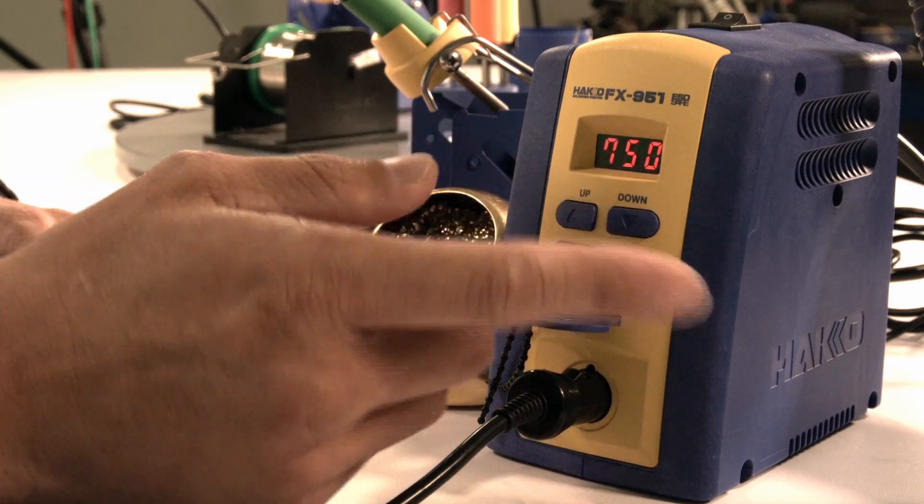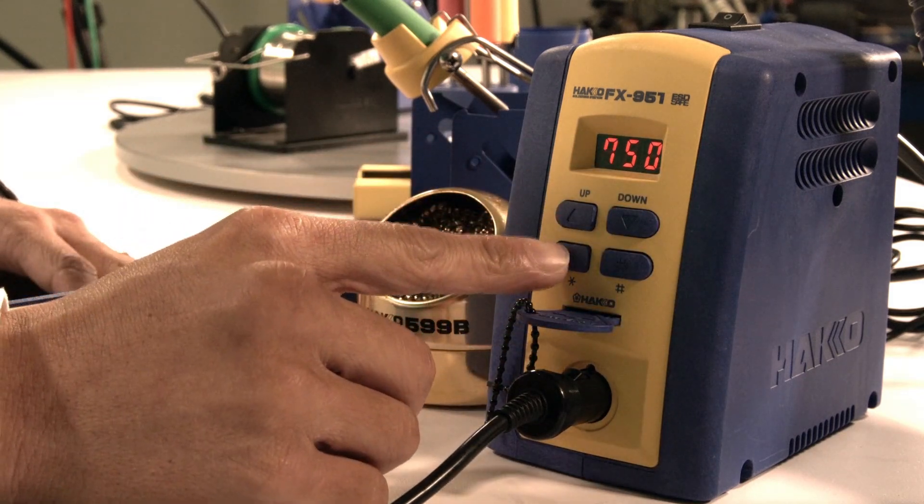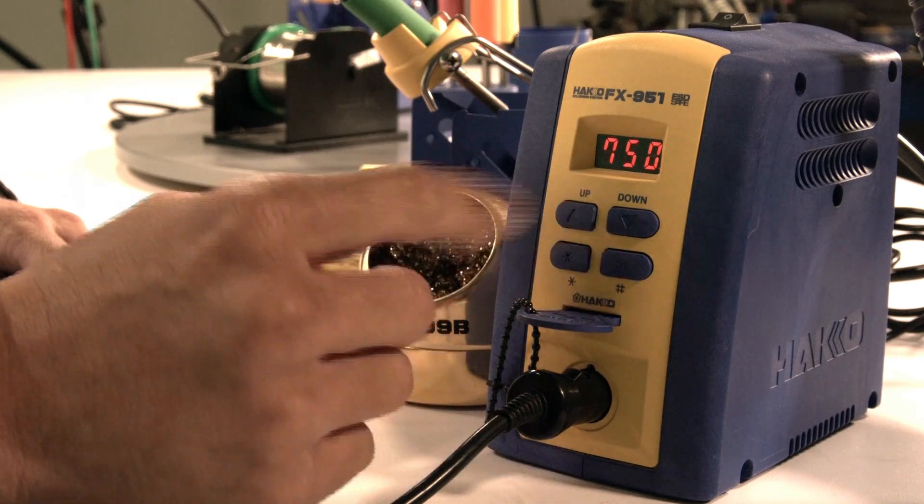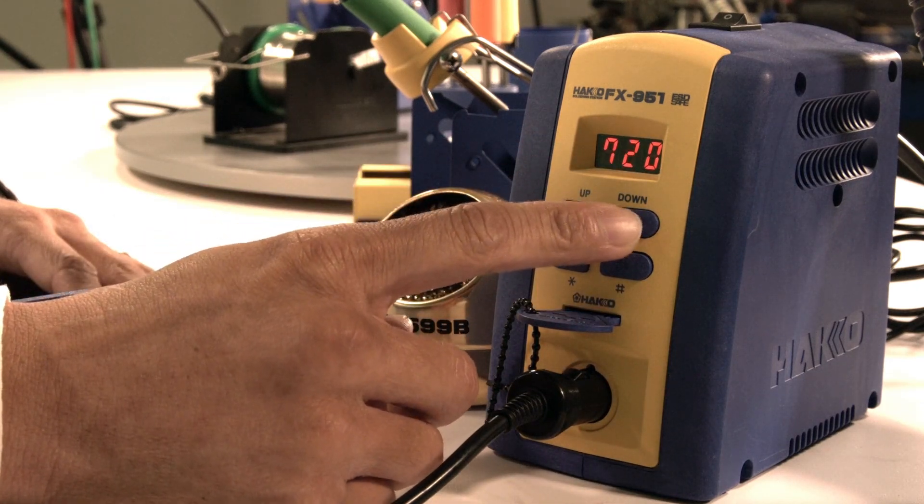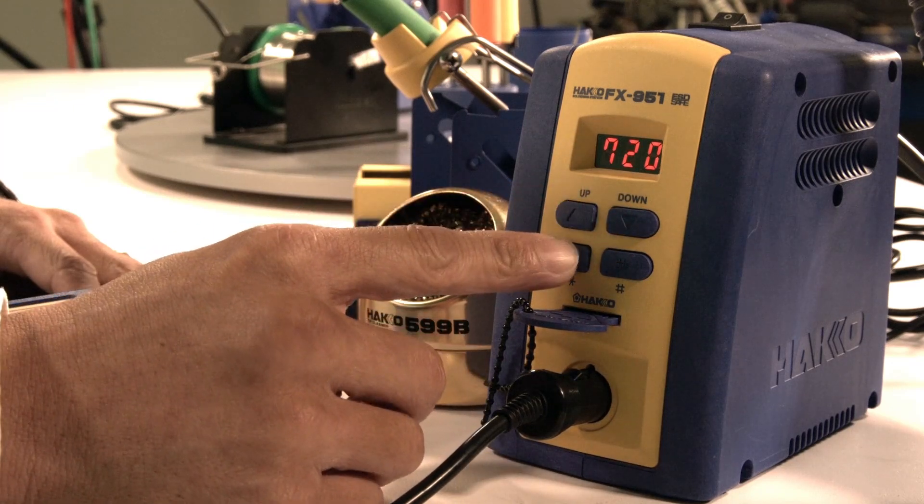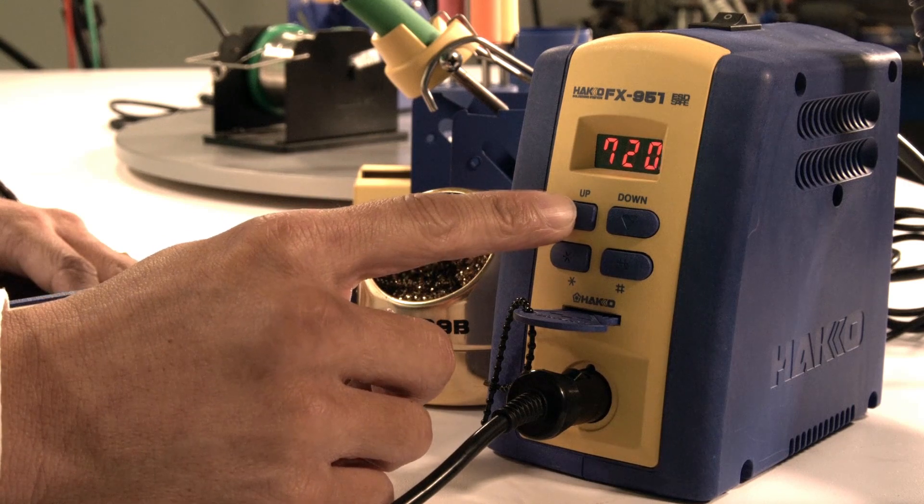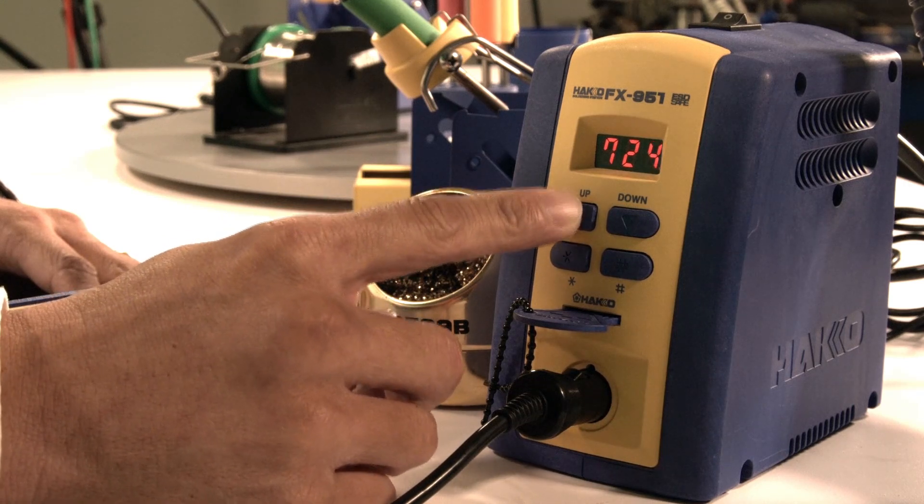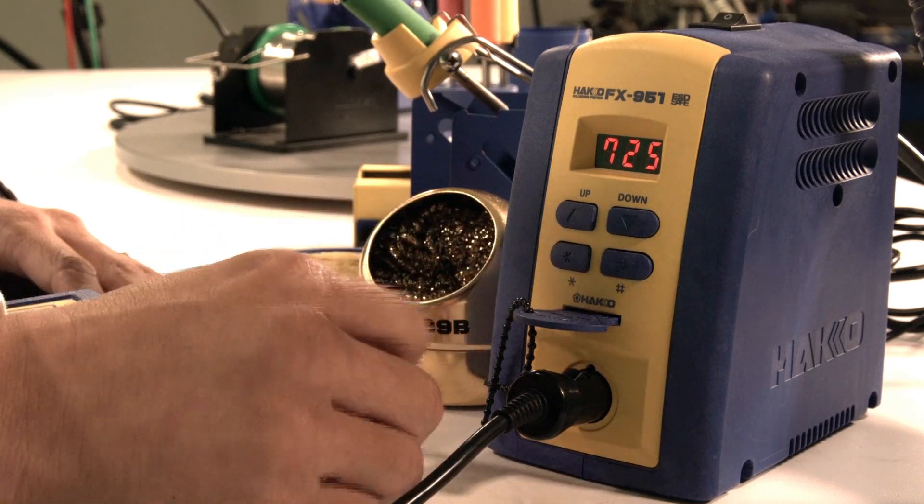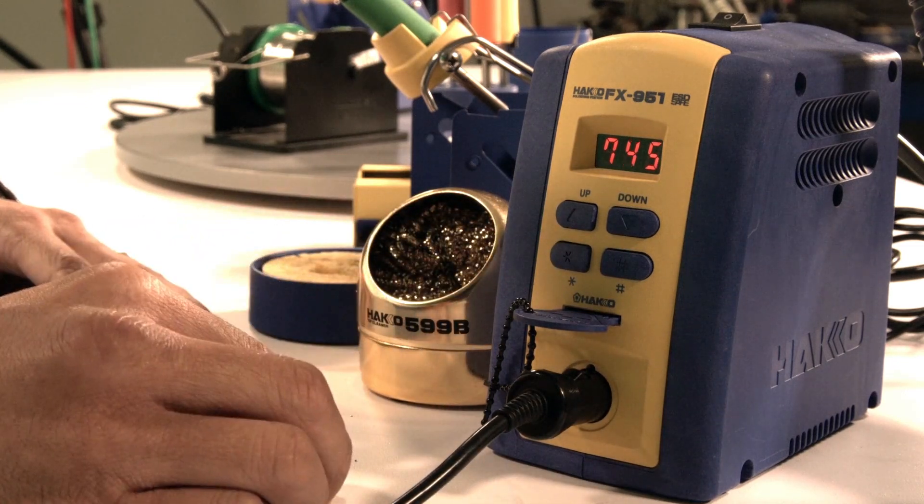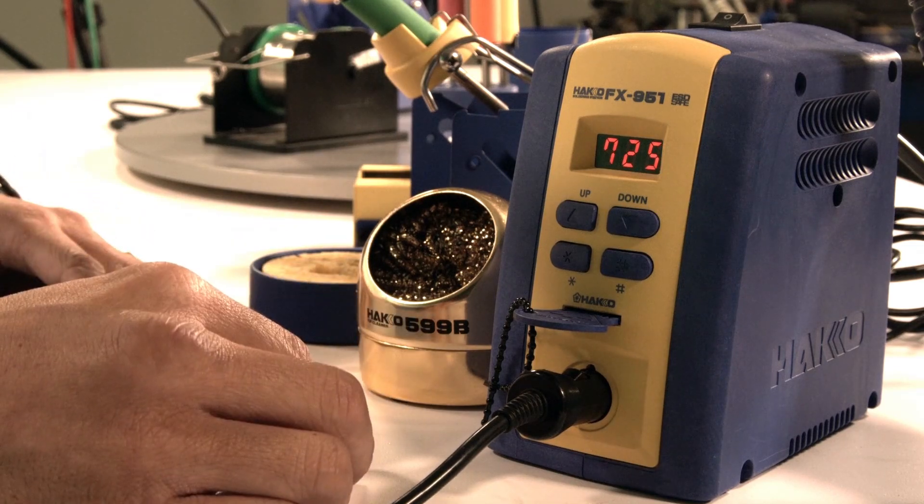If you need to change your set temperature, use that same button, press and hold it. Your display will begin to flash. Using the combination of your up and down keys along with the star button, you make your desired selection. For example, if you want to go from 750°F to 725, I use the star key to confirm the hundreds digit, it moves over to the tens digit, and I use the arrows to go down from 5 to 2.